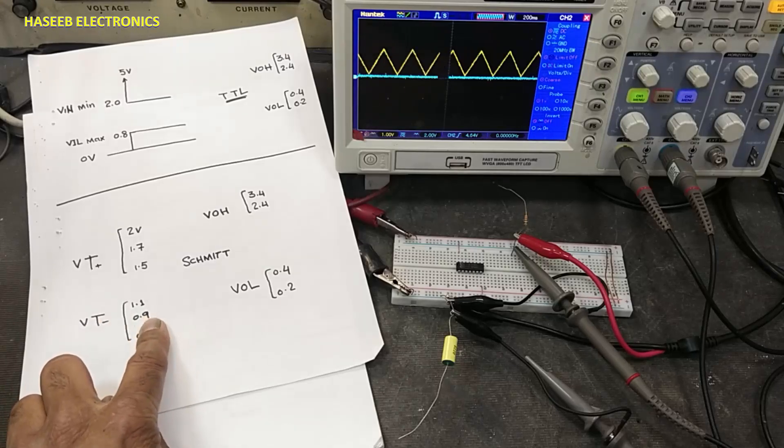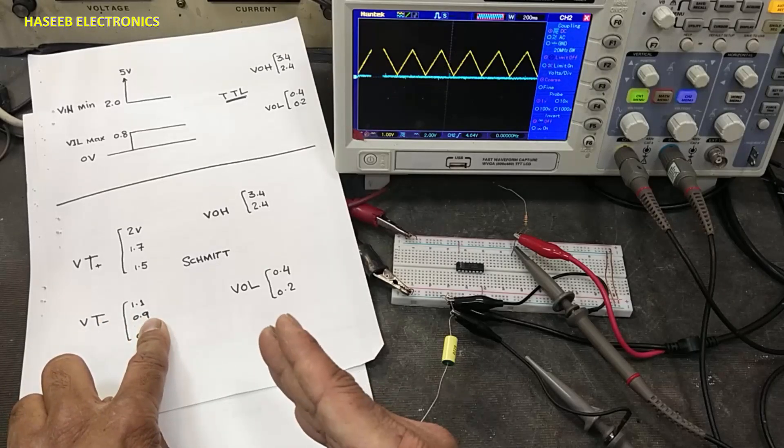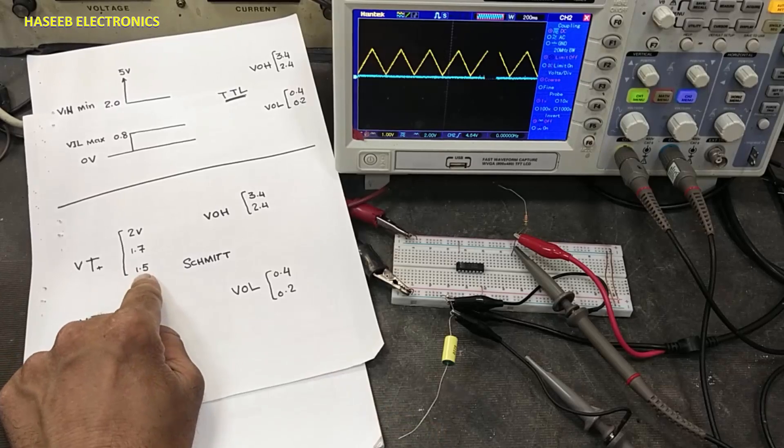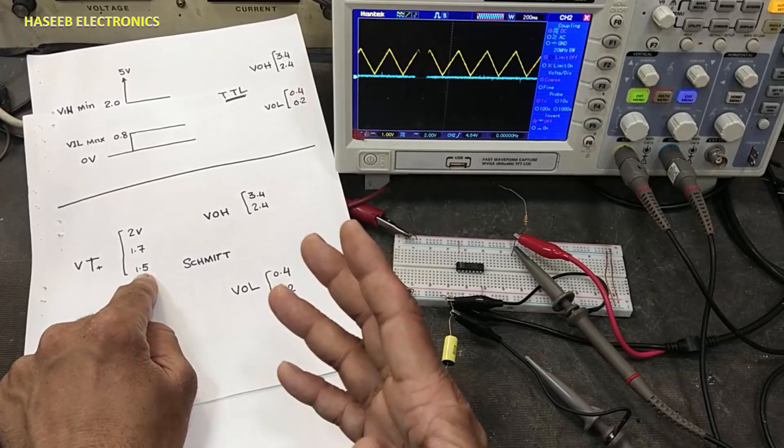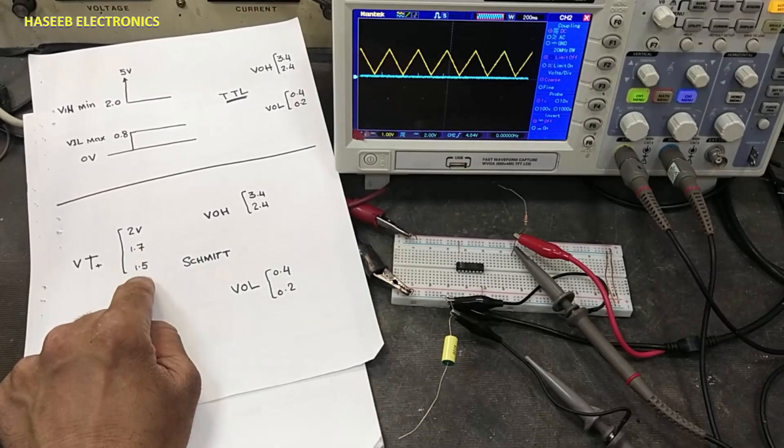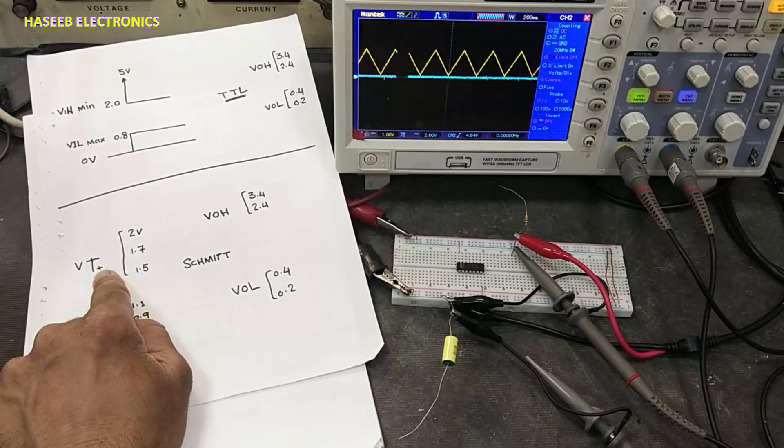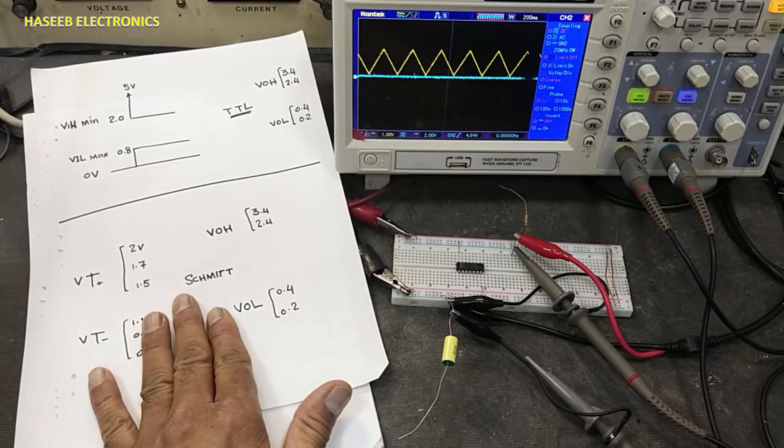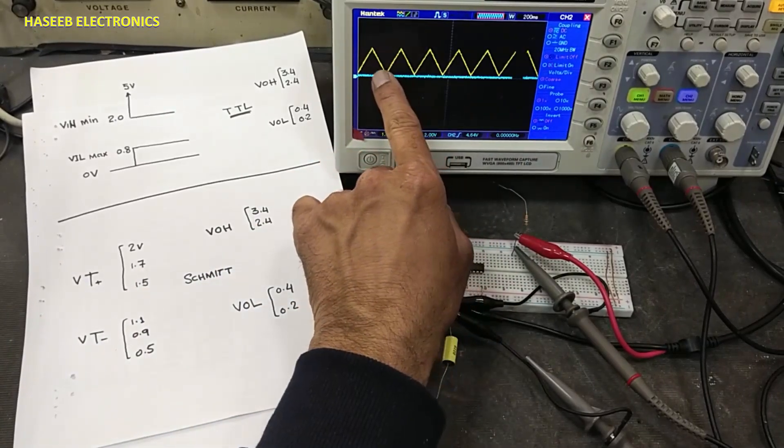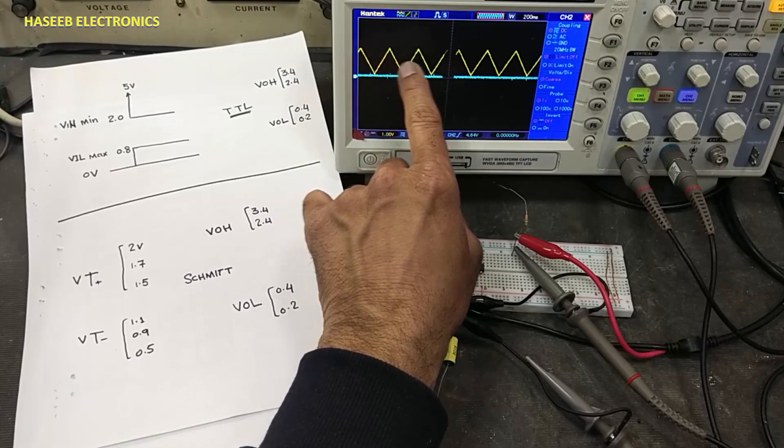When voltage increases to 1.5 volts and above, it is considered logic high—that's the positive threshold trigger. This IC has trigger input thresholds. It will detect the input signal level then provide TTL output.